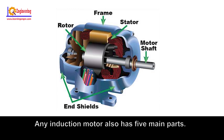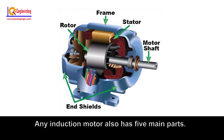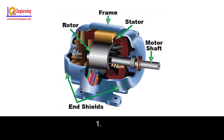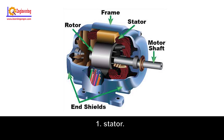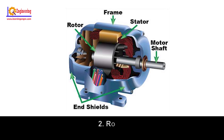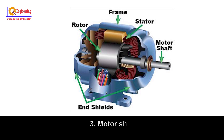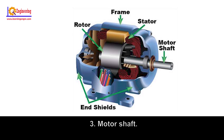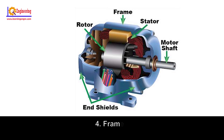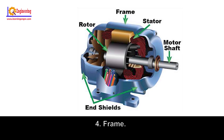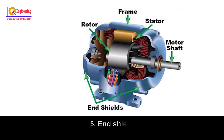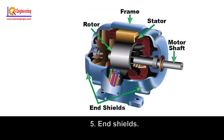Any induction motor has five main parts: Number 1, Stator. Number 2, Rotor. Number 3, Motor shaft. Number 4, Frame. Number 5, End Shields.